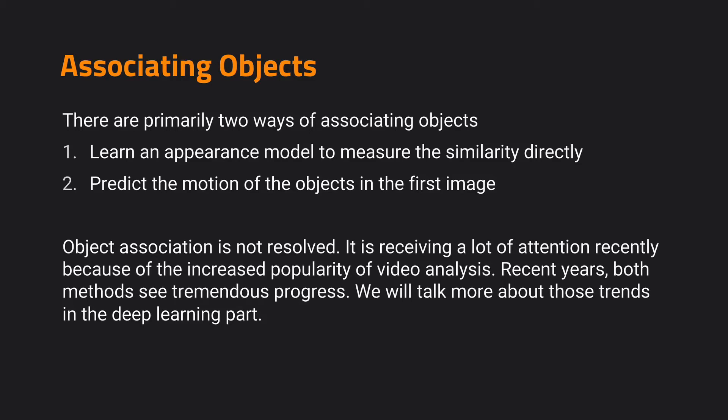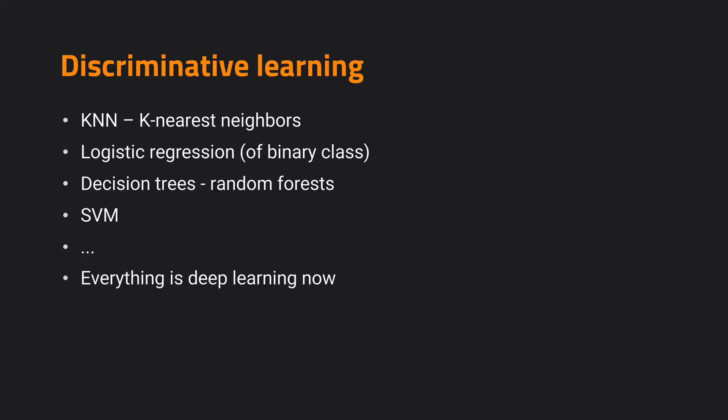We will talk more about those trends in the deep learning part, since given more powerful discriminative models, the balance of different methods actually changes. People have tried a lot of discriminative learning methods for detecting and associating objects, like KNN, logistic regression. Around 20 years ago, decision trees and SVM became very popular because of their proven properties and practical effectiveness. Around 10 years ago, when deep learning became more popular, people gradually shifted their attention to deep learning models. But the core is still the same: we want to build descriptive learning models to solve those core tracking tasks.